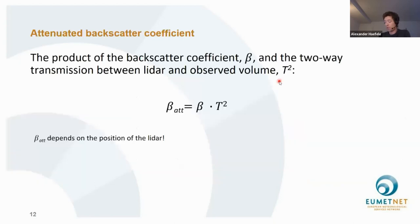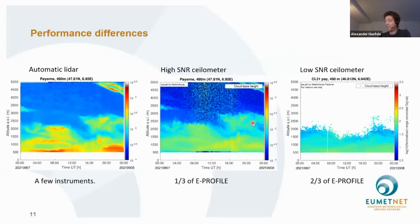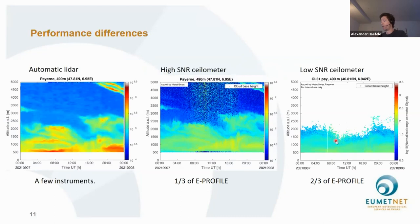It is important to mention that E-PROFILE builds on existing infrastructure — we are not installing new instruments, only integrating data from existing instruments. That is why we also have many low-SNR ceilometers, because they are quite abundant across Europe.